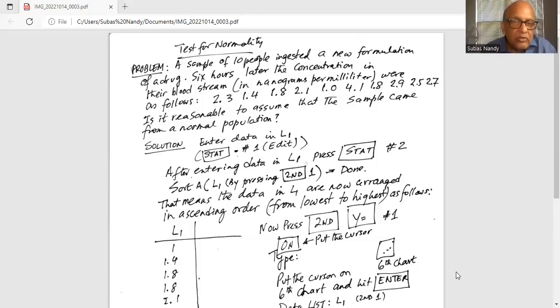We are going to enter the data set in L1. So we will do 2.3 in L1, first data point. Then 1.4 and enter. Then 1.8 and enter. 2.1 and enter. Then 1.0 and enter. Then 1.8 and enter. 2.9 and enter. 2.5 and enter. 2.7 and enter.